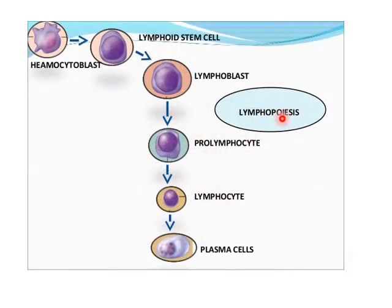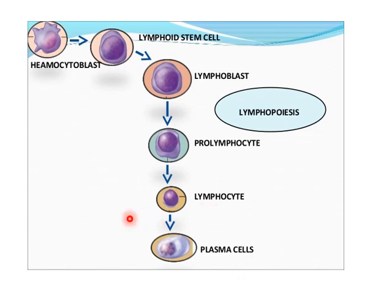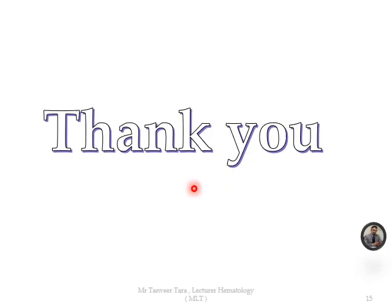This is the process of lymphocyte production, known as lymphopoiesis. Remember that lymphocytes are also agranulocytes. They have only three stages, similar to monocytes: lymphoblast, then prolymphocyte, and then lymphocyte. When lymphocytes become activated, they can also lead to the formation of plasma cells.